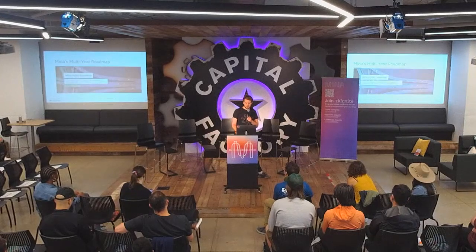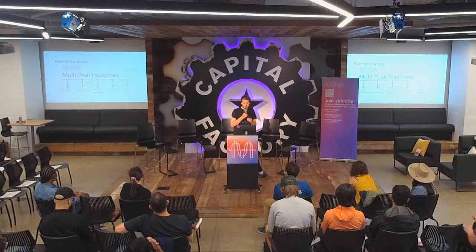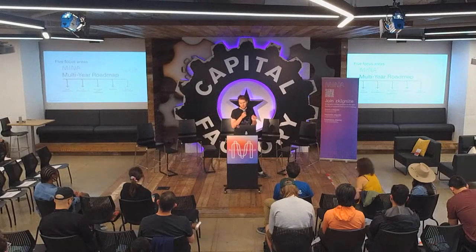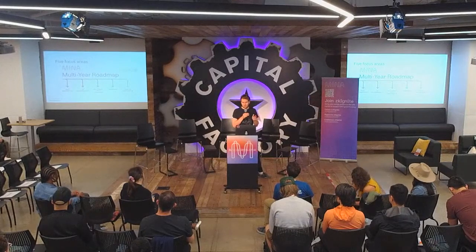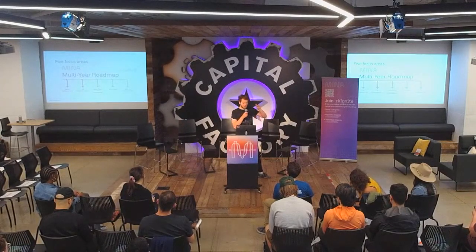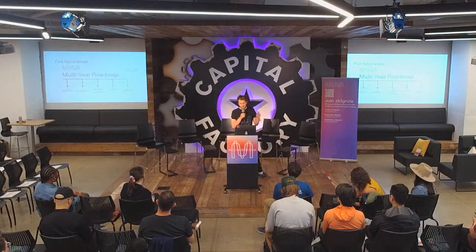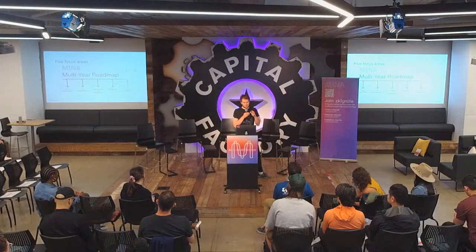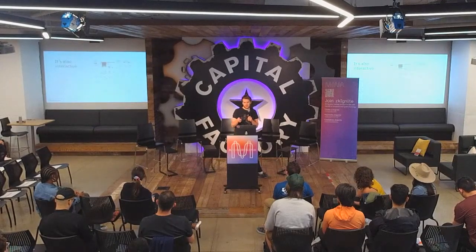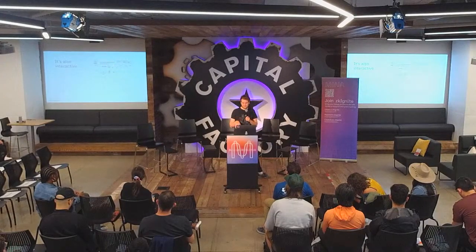We recently announced a roadmap with a few tracks: trust minimization, EQ programmability, settlement layer performance, Muniverse — which is a roll-up layer — and road to DAOification. This is a multi-year roadmap. If you're curious about the long-term direction of a layer-one blockchain like Mina, check it out — you can hover over things and read descriptions of individual items. It shows a very complete long-term vision for Mina.